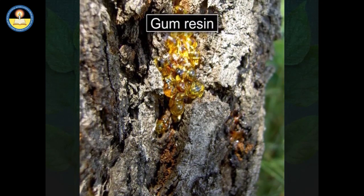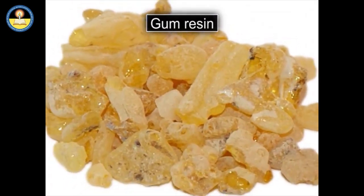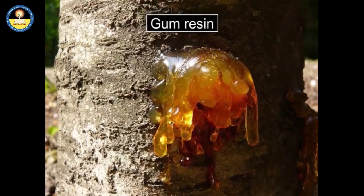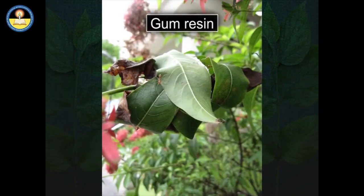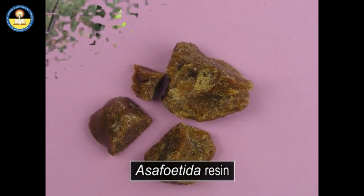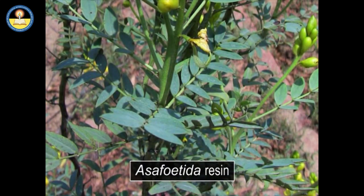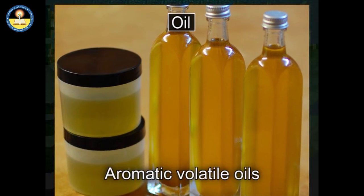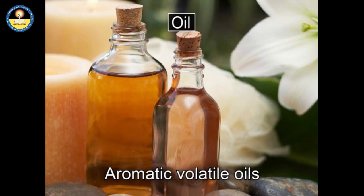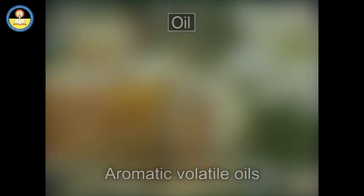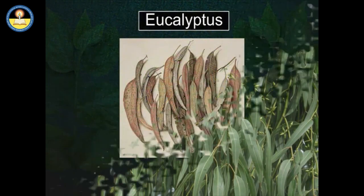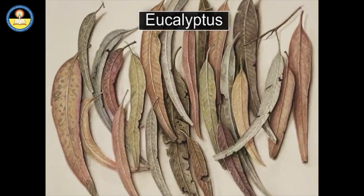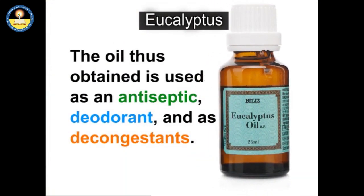Gum and resin: many plants produce gums and resins used to make a wide range of products. Gum resin is a natural mixture of gum and resin obtained from the roots, leaves, and barks of certain plants. Asafoetida resin is produced by solidifying juice that comes out of cuts made in the plant's living roots. Oils: these are aromatic volatile oils secreted by special glands present in flowers and other parts of plants. From the leaves of the eucalyptus tree, oil is obtained after laboratory treatment and is used as an antiseptic, deodorant, and decongestant.